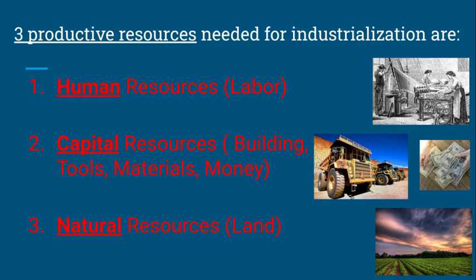The three productive resources are: human resources, also known as labor, which you can see in the picture on the right; capital resources, which include building materials, factories, machines, tools, materials, and money; and natural resources, which are a productive resource including land. We're going to focus primarily on human and natural resources, but also capital resources, especially with the rise and strengthening of industrialization.